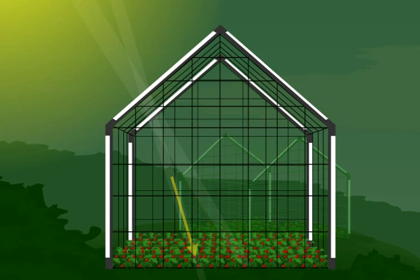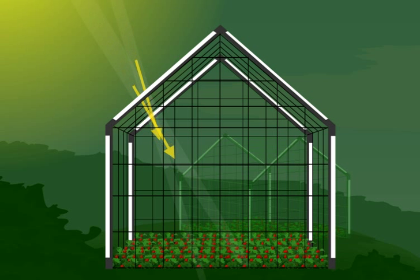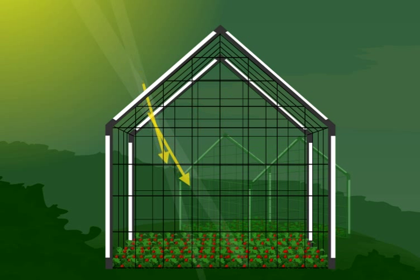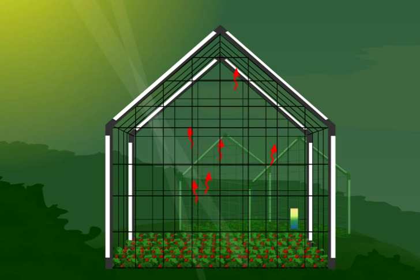What happens then is the ground inside the glass house is heated up. When this ground is heated, it radiates thermal infrared radiation. Now the glass material does not allow this radiation to pass through, so the heat is trapped inside the glass house and because of that the temperature inside the glass house rises.